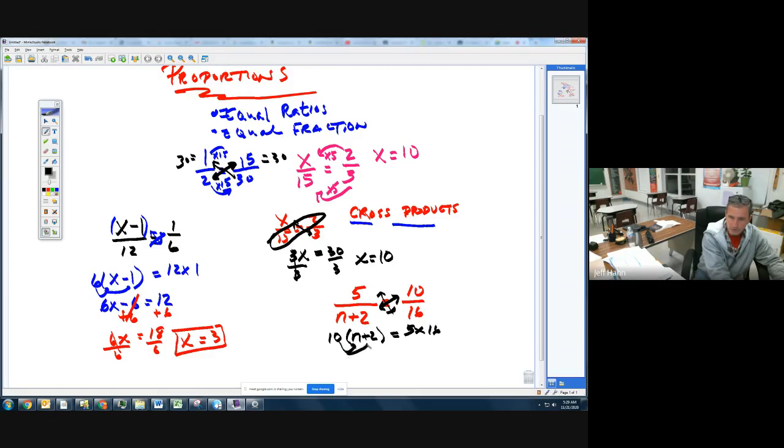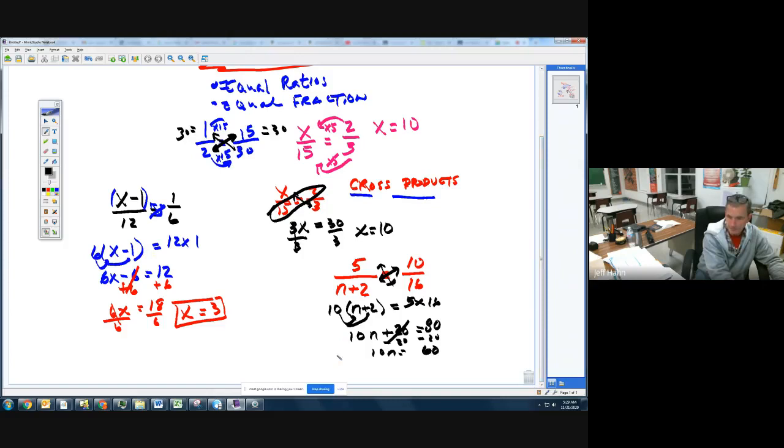Doing a little distributive property here as we solve this. I get 10n plus, multiply the 10 times 2, we get 20. And 5 times 16 is 80. Solving the equations, subtract 20, subtract 20. If 10n equals 60, I do have a little more room down here. I divide by my 10, divide by my 10. So n is going to equal 6.